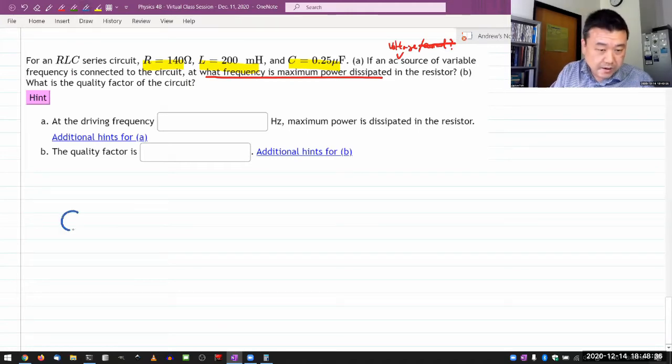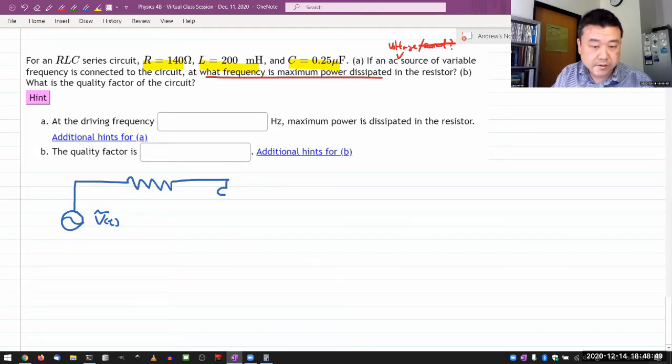So this is what the circuit looks like. I think I've drawn this several times. This is my AC source, some time-dependent voltage, and I have my resistor and inductor and capacitor.